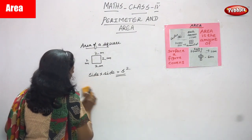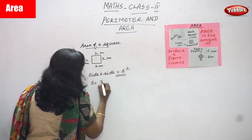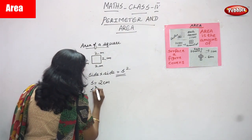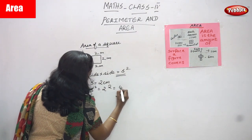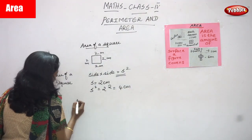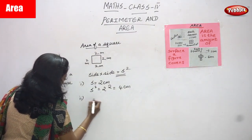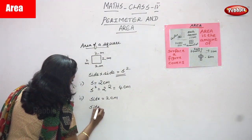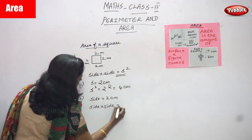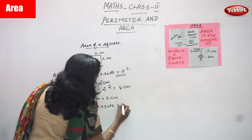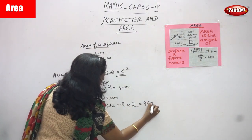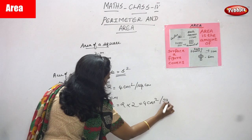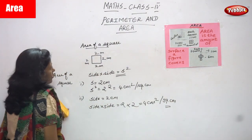Otherwise, you can write: side is equal to two centimeters, so s squared equals two squared, which equals four centimeters squared. That is one method. Otherwise, area of a square formula: side into side — s into s, or a into a, both are the same. Two into two gives four centimeter square or square centimeter. This is the right answer for the question.